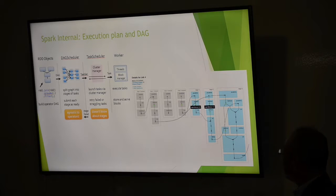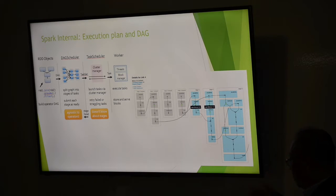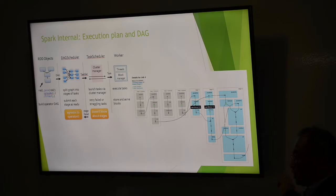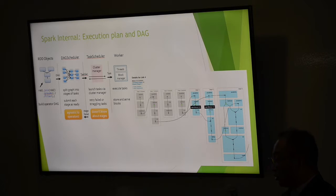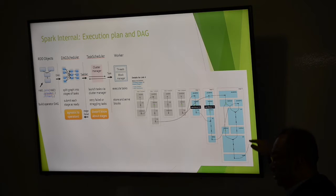Spark generates all these query plans. For small data up to 20 gigabytes you probably don't care, but for 50 gigabytes in one job, these plans actually determine whether your job succeeds or fails. Spark generates a plan, then translates that plan into a DAG — a Directed Acyclic Graph. The DAG generates tasks, tasks are placed on worker nodes, and this graph on the right is a translation of all those steps into the cluster execution.